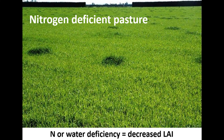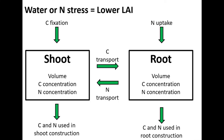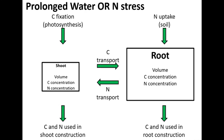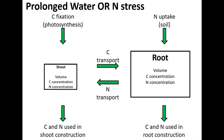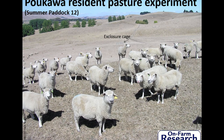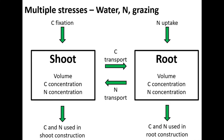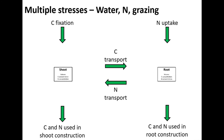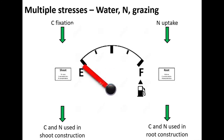If we have a water or nitrogen deficiency, the first thing that happens is we lose leaf area. Initially the plant responds by seeking increased root growth, but over time in a drought — under prolonged stress with animals still grazing — both root and shoot eventually decline to the point that the plant is running on empty. We need to understand this dynamic within our plants, recognize it, and manage accordingly.